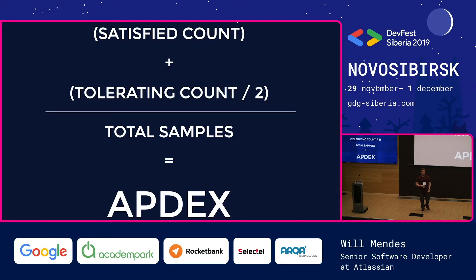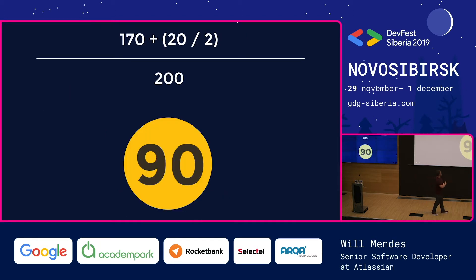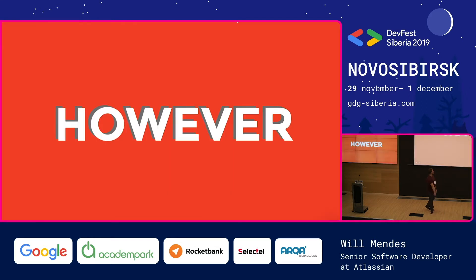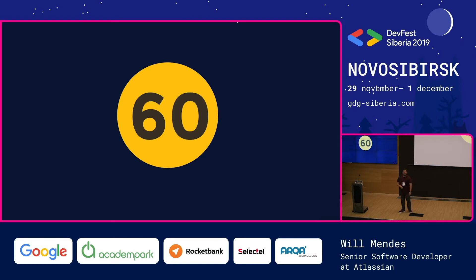Here's the math: you have the number of satisfied users, the number of users that are tolerating — for example, if your page takes three seconds to load and some users are okay with five seconds, those users are the tolerating ones. You divide them by two, get the total of tolerating and satisfied together, and that's the Appdex number. It's a range from zero to 100, so 90 is actually quite good. However, we had 60. Long journey, but the first point was we were aware of that, so we could work on it.